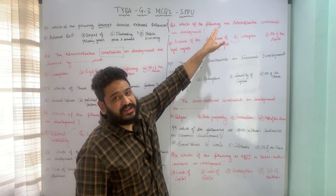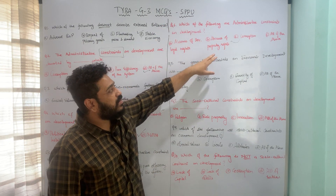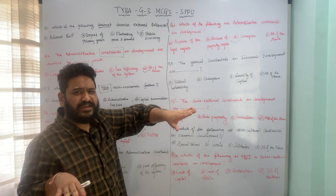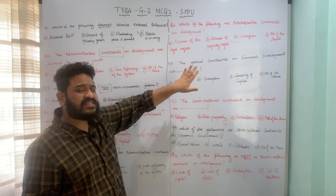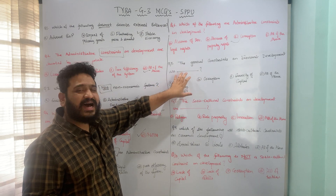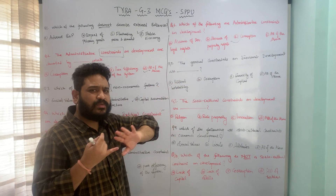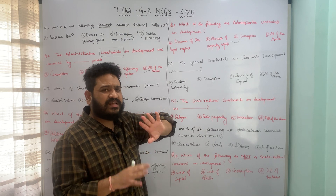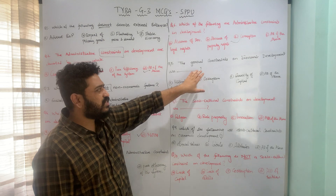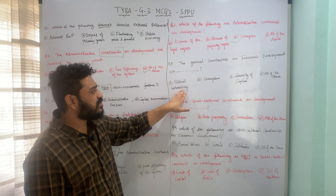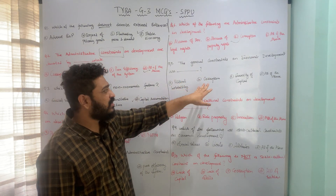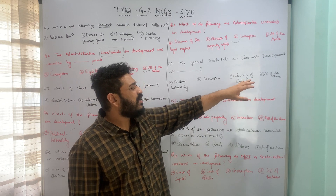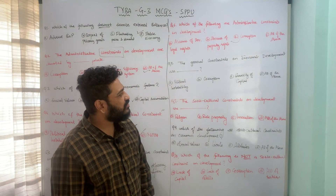Corruption is confirmed as an administrative constraint on development. The next question asks: what are the general constraints on economic development? The options are: A) political instability, B) corruption, C) scarcity of capital, and D) all of the above.